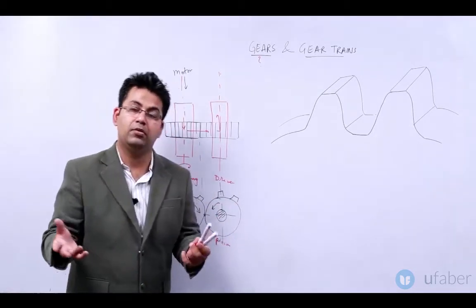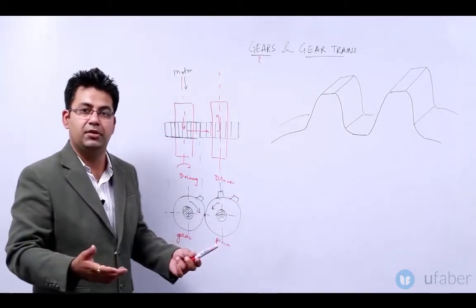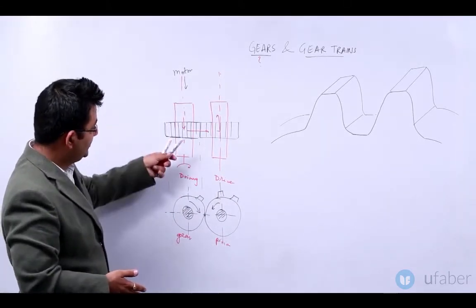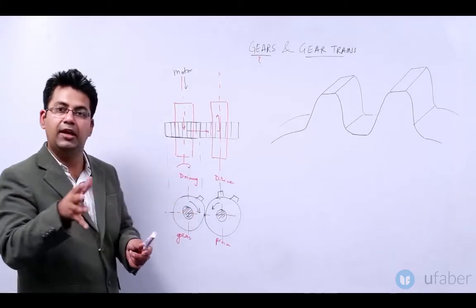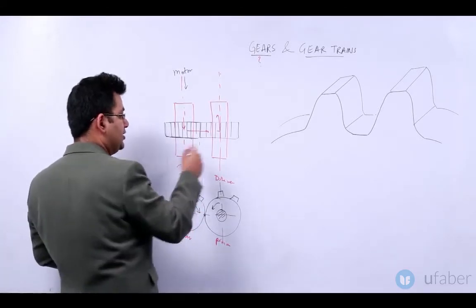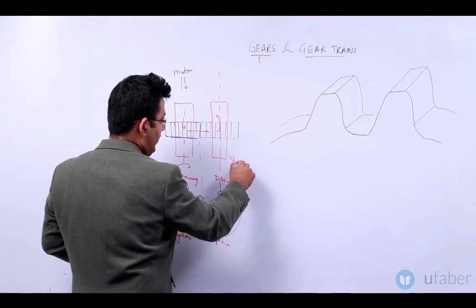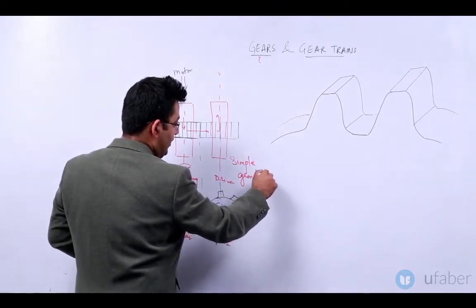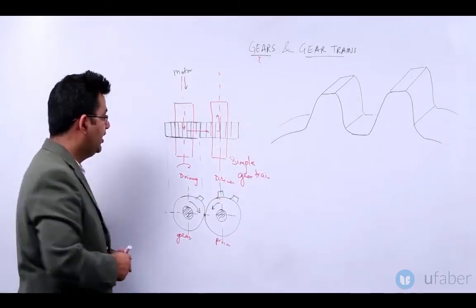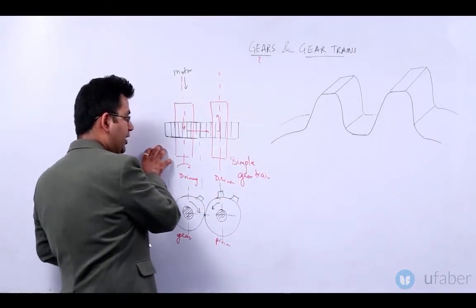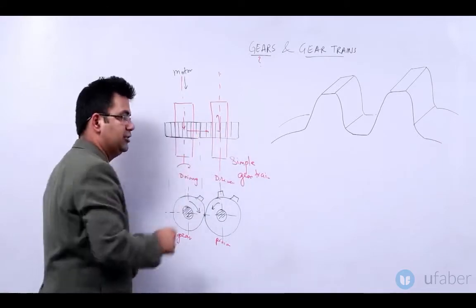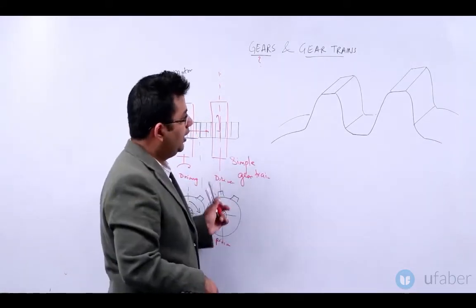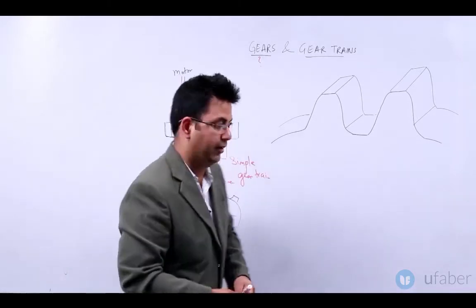This setup is basically a gear train — it is the power transmission element between two machine elements. This particular kind of gear train is called a simple gear train, in which the power from the drive gear to the pinion is transmitted between two parallel shafts.